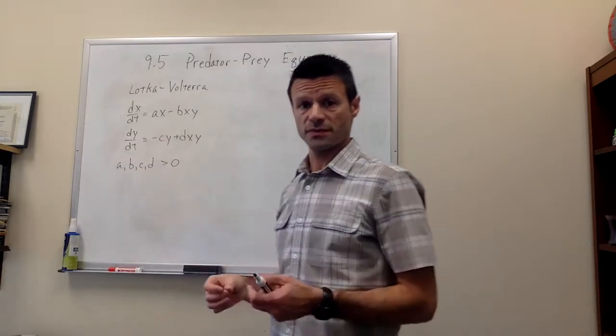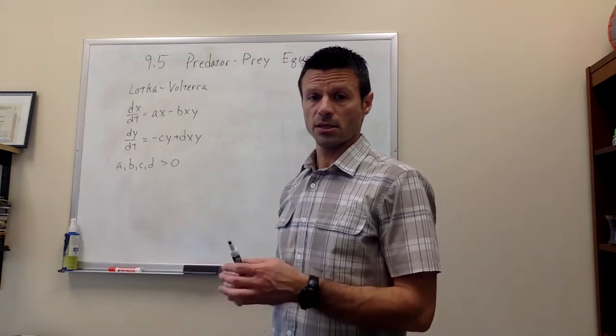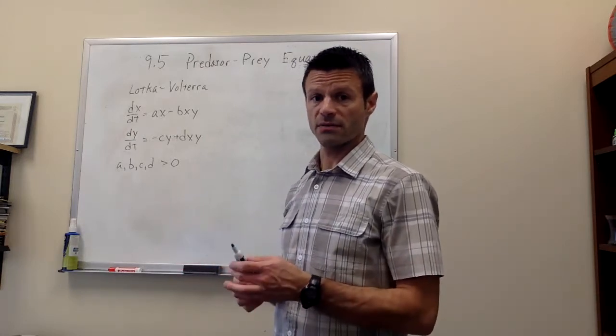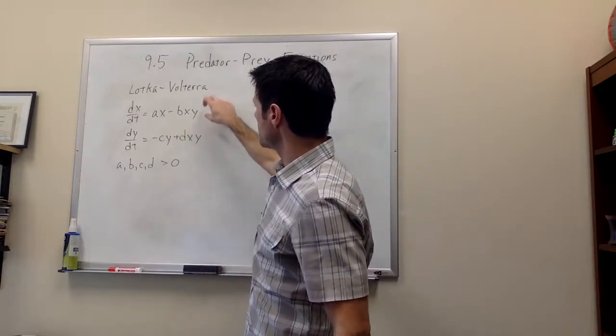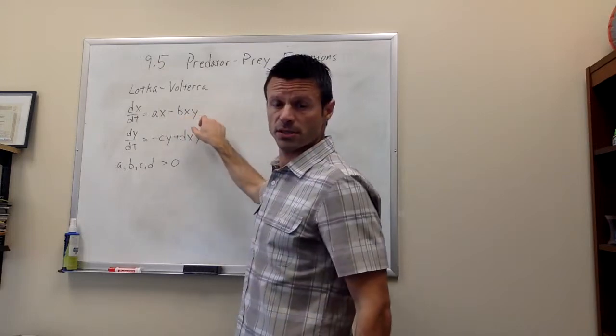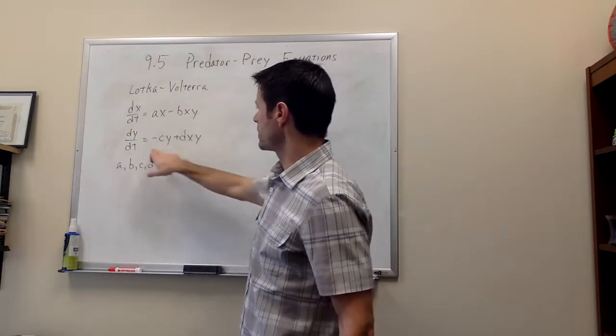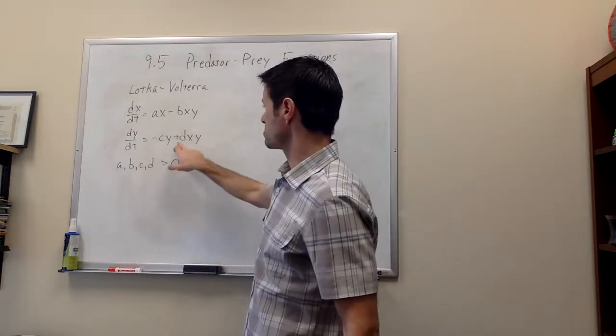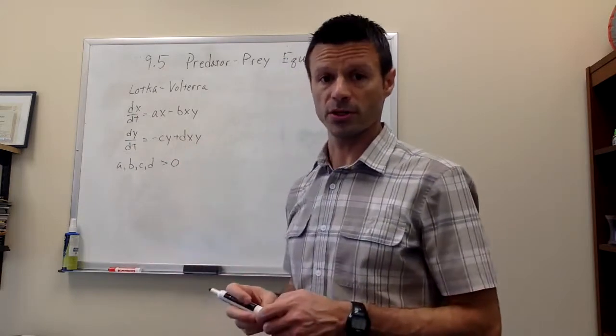Now because of the predation, there's an interaction between the predator and the prey that's given by these nonlinear terms. In the dx dt equation, it's given by minus BXY, so the interaction hurts the prey. And then for the predator, that interaction term is plus DXY. So that interaction will help the predator survive.